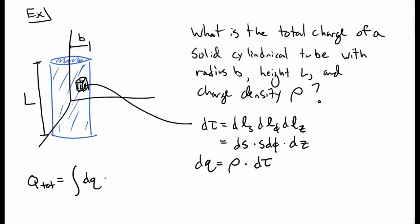The total charge is, of course, the integral over dq. Since this is a volume, that means we're going to have three integrals. We have three coordinates to integrate over. So we have rho s ds d phi dz, where s goes from 0 to b, phi goes from 0 to 2 pi, and z goes from negative l over 2 to l over 2.